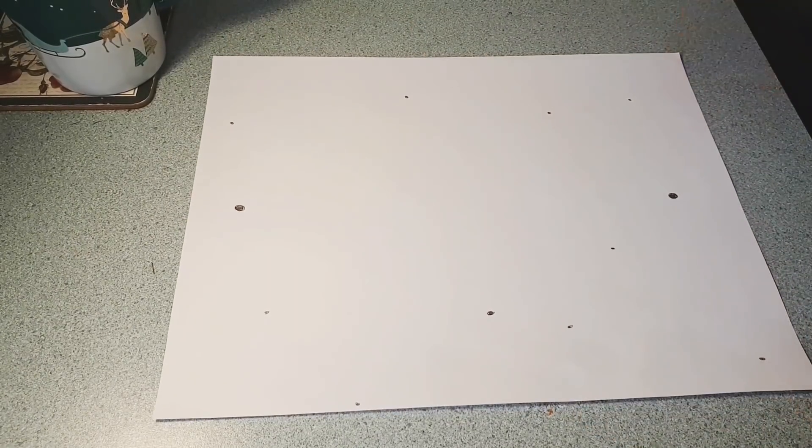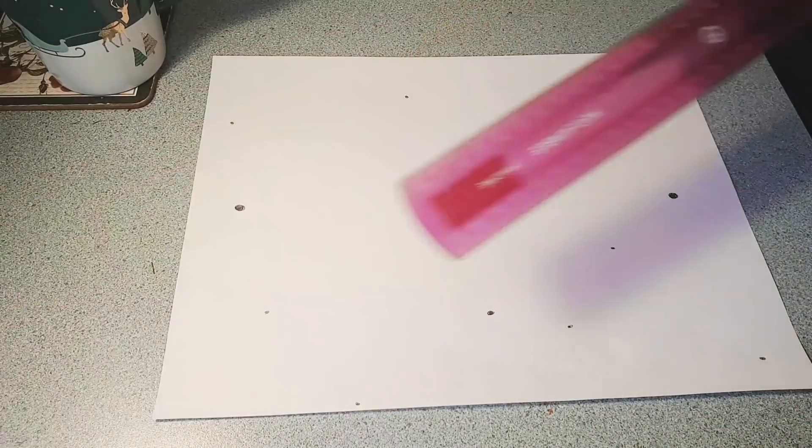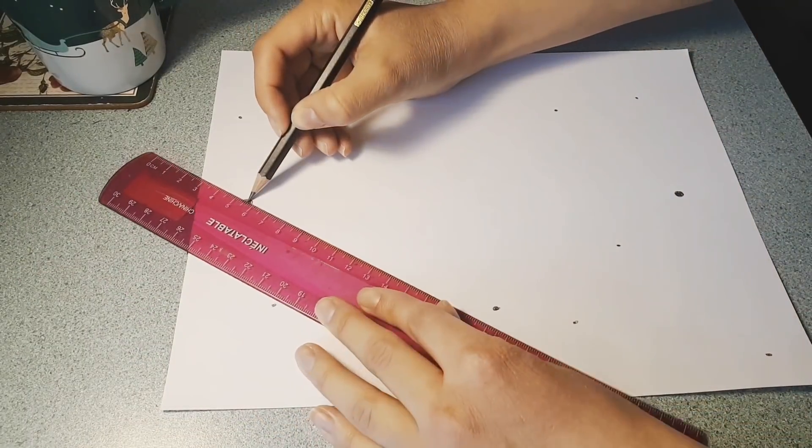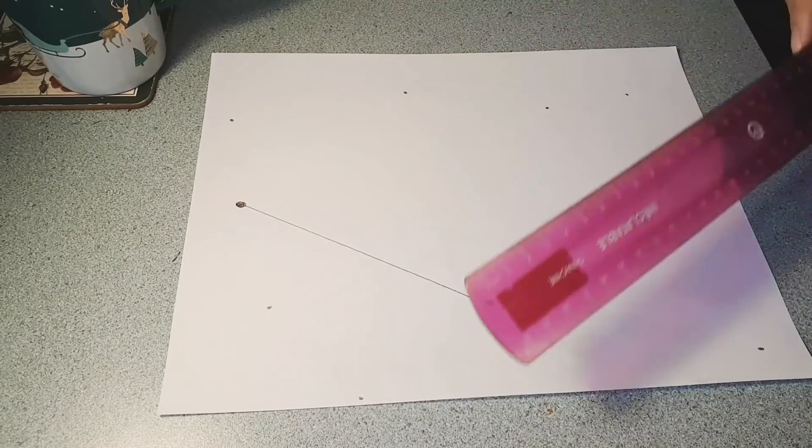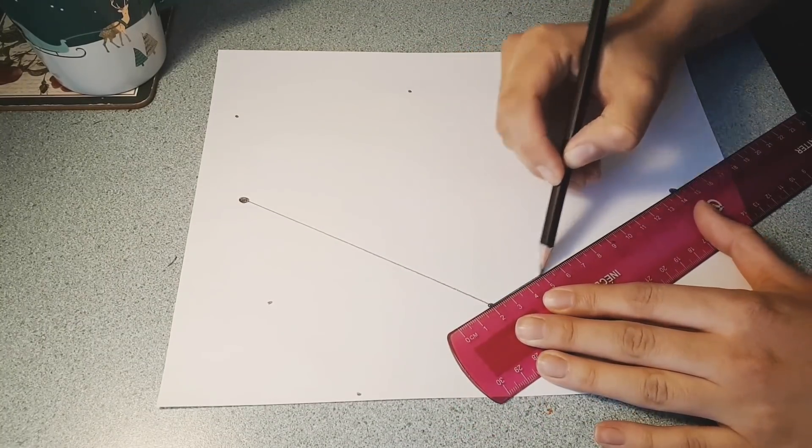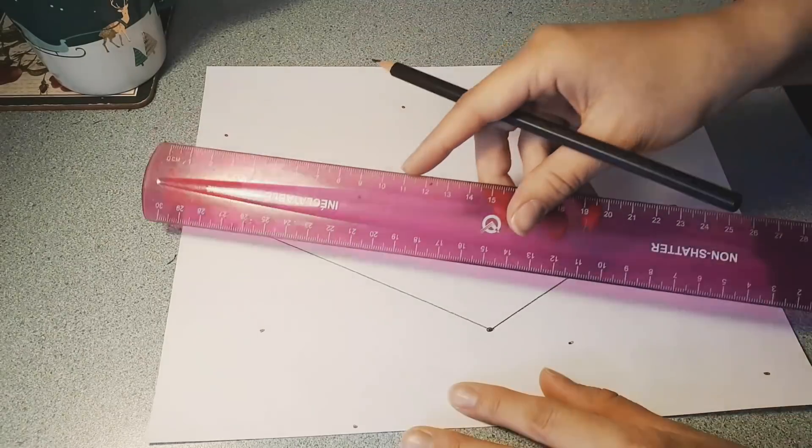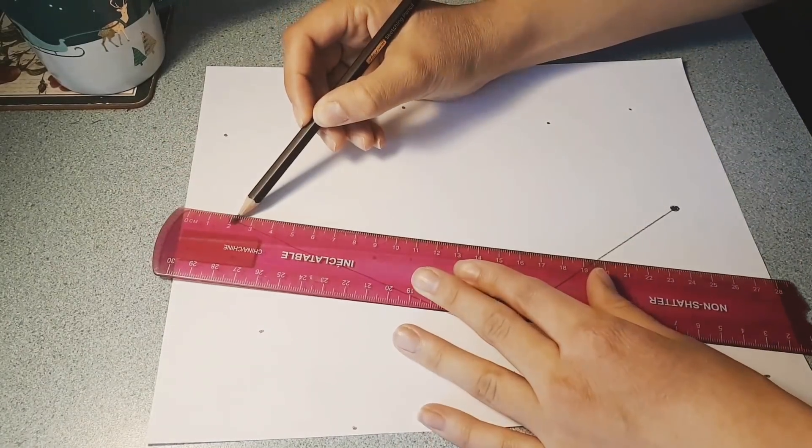Now grab your ruler. You are going to draw a straight line from one of the big dots to a small dot. From that small dot, draw another line to the big dot. You are going to repeat this action for all of your small dots.